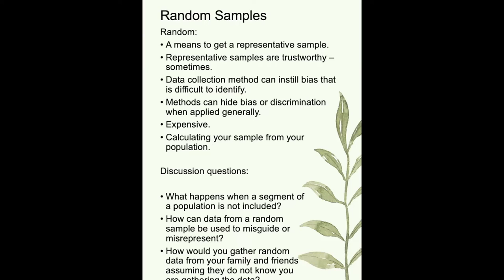We talked a little earlier about bias. About 20 years ago or less, random samples were gathered with telephones — people would call up and people would answer. Today, if you get a call from someone you don't recognize, you're probably not going to answer. So what are other ways to gather data that would be representative, without significant bias or big hurdles? We'll talk about that in another training.